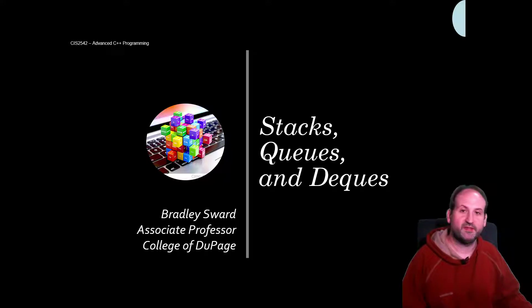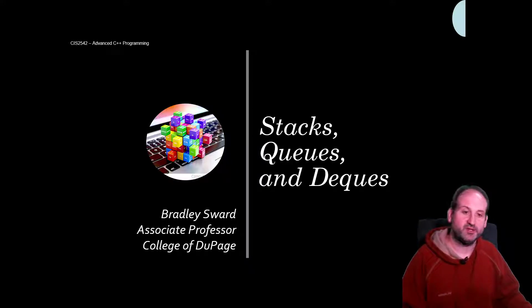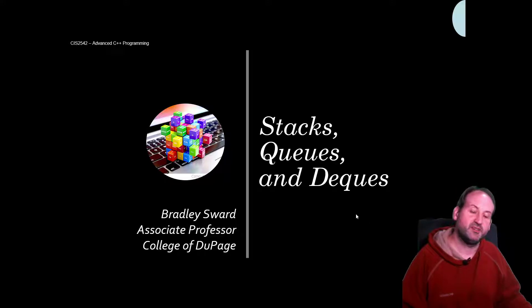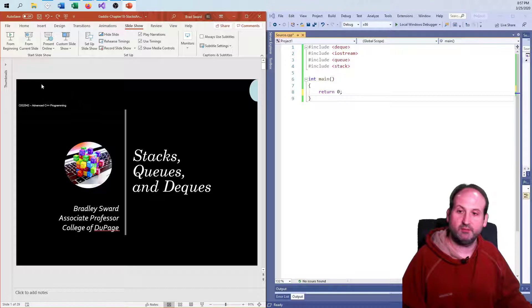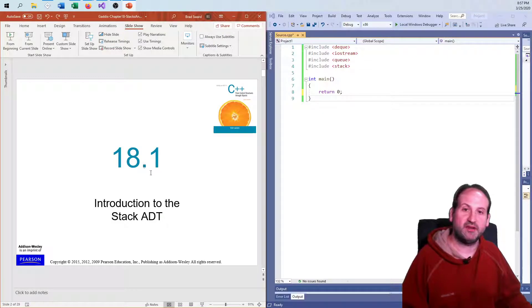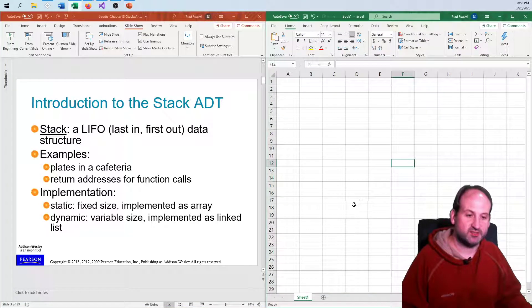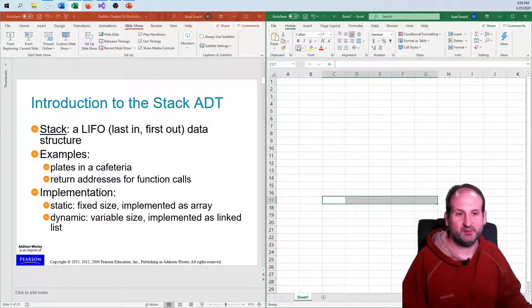We pretty much have an understanding already of what a stack is and what a queue is. Maybe not so much a double-ended queue, but we'll see that it's kind of a combination of the two. Moving on to the first slides, we're going to start by taking a look at what a stack is. It is a last-in, first-out data structure — think of a stack like plates in a cafeteria or at home.